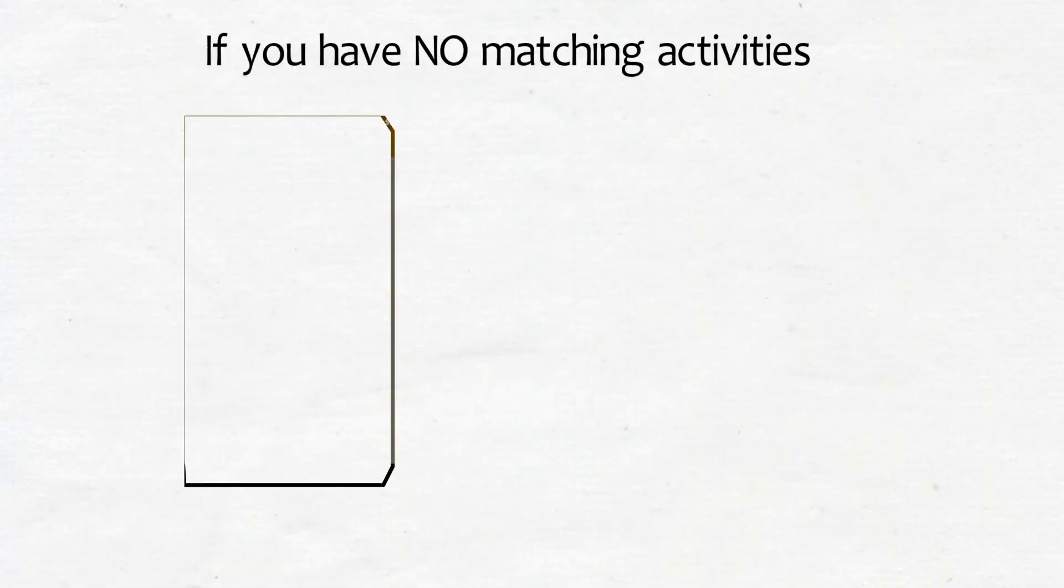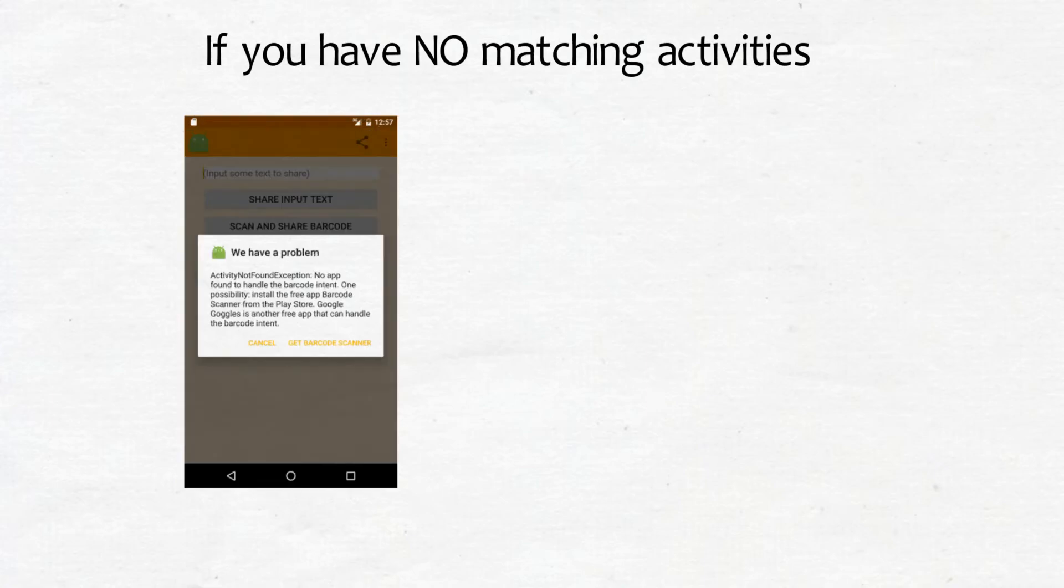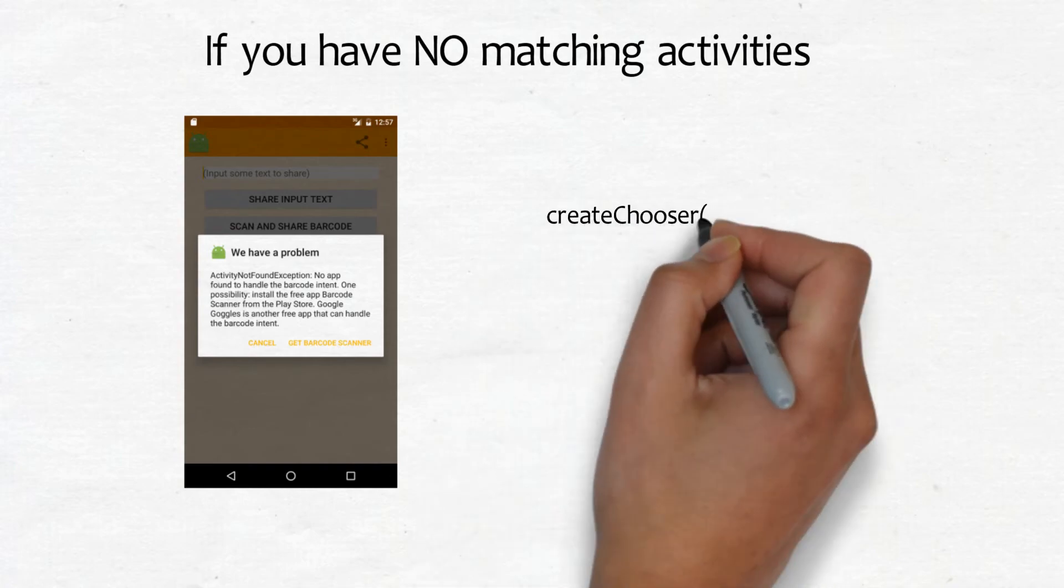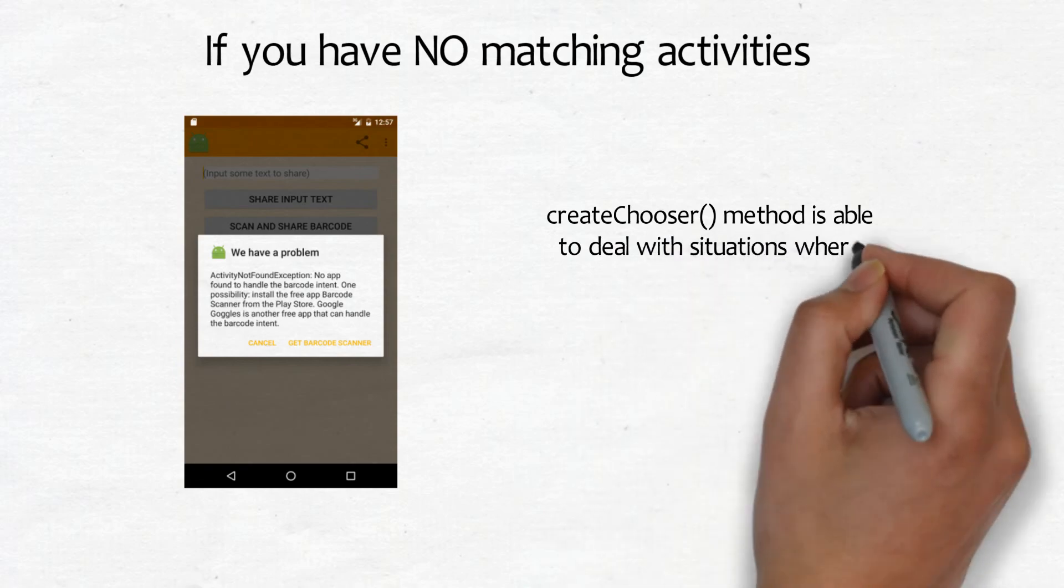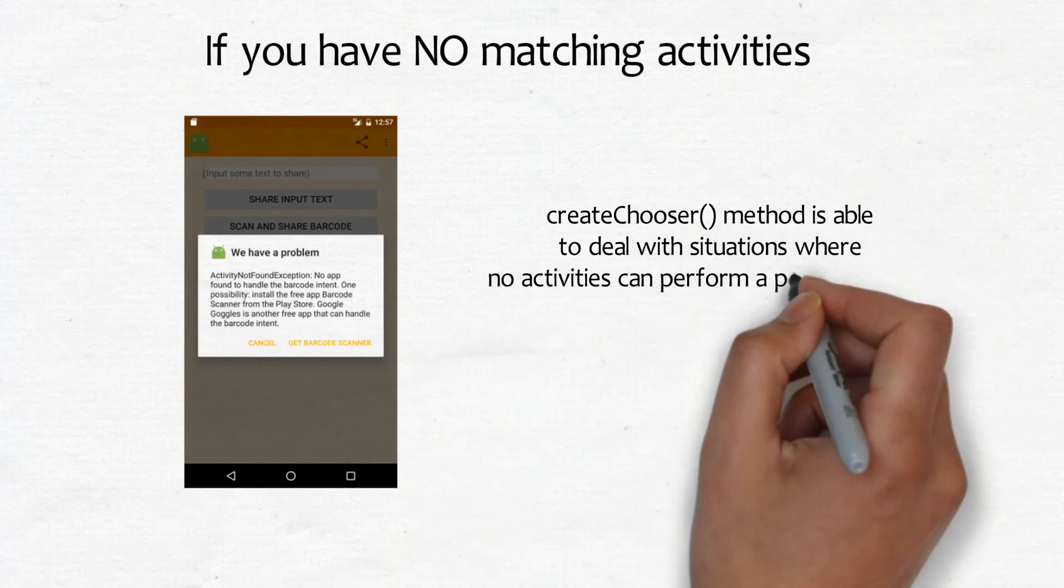If you have no activities on your device that are capable of sending messages, the createChooser method lets you know by displaying a message. This behavior is another benefit to using the createChooser method. The createChooser method is able to deal with situations where no activities can perform a particular action.